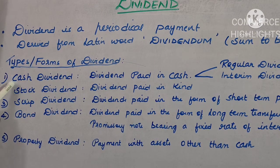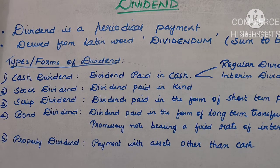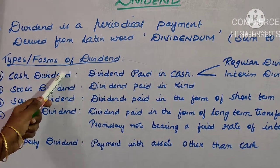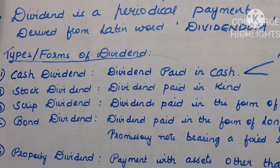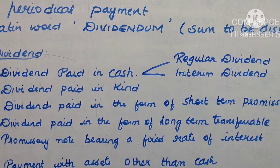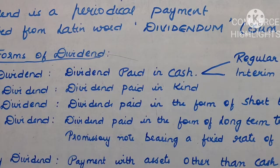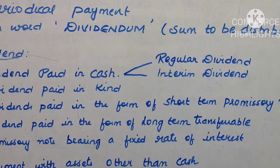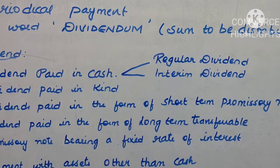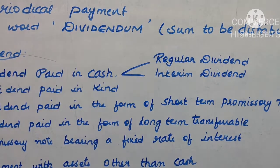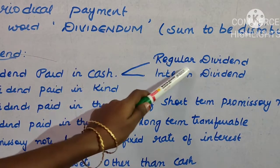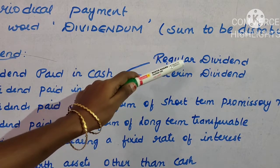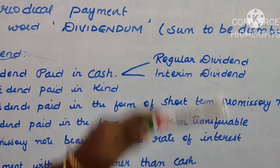Cash dividend is any dividend which is paid in the form of cash — a return distributed to the shareholders in the form of cash. Cash dividend is of two types: it may be a regular dividend or an interim dividend. Regular dividend means a dividend distributed regularly on every accounting year after the final accounts are prepared — it is paid at the end of a trading or accounting period.